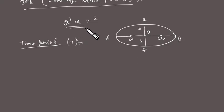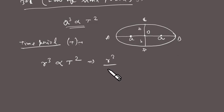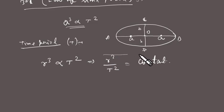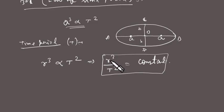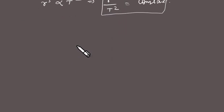This statement can also be expressed in terms of the mean distance from the Sun to the planet. Since the planet travels in an ellipse, the distance is always changing, so if we take r as the mean or average distance, then r³ is proportional to T², or equivalently, r³ divided by T² equals a constant. This is a very important result relating the planet's distance from the Sun to its time period.